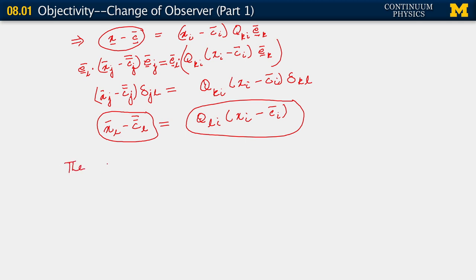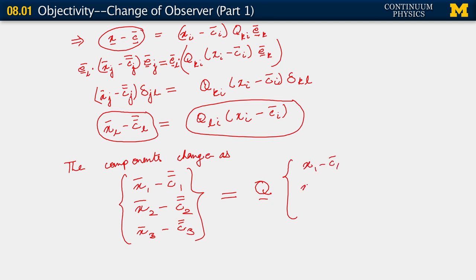If we think of the components, those components change as x bar_1 minus c double bar_1, x bar_2 minus c double bar_2, x bar_3 minus c double bar_3, equals q, the tensor q, acting on x_1 minus c bar_1, x_2 minus c bar_2, x_3 minus c bar_3.